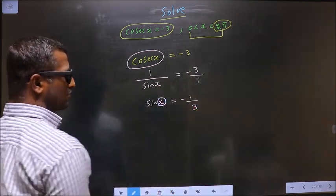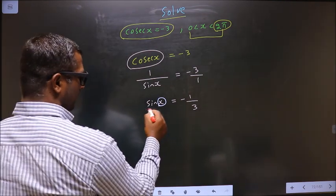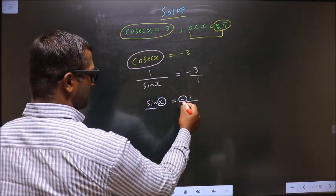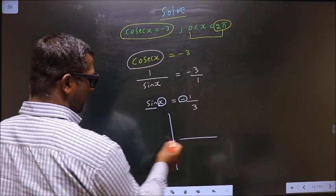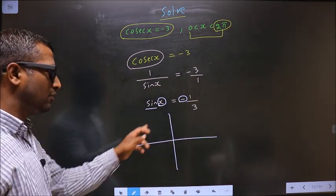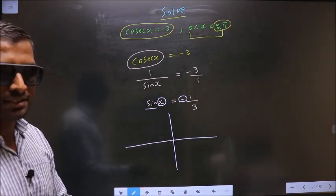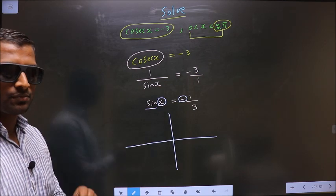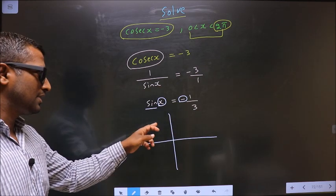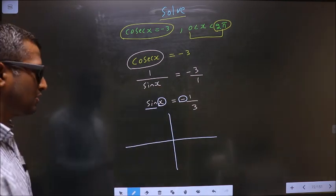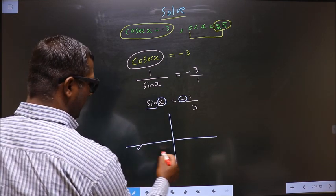Now to get the values for x, here I have sin and here it is negative. So now you check in what all quadrants is sin negative. It is all silver tea cups. So sin is negative in the third and in the fourth.